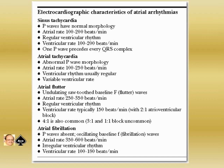What is atrial flutter? Undulating sawtooth baseline F-waves — that is, flutter waves. Atrial rate 250 to 350 beats per minute from the P-P interval. Regular ventricular rhythm; ventricular rate is typically 150 beats per minute, that is 2:1 atrioventricular block. 4:1 is also common; 3:1 and 1:1 blocks are uncommon. In atrial fibrillation, the P-wave is absent; oscillating baseline fibrillation waves are seen; atrial rate 350 to 600 beats per minute; irregular ventricular rhythm; and ventricular rate is between 100 and 180 beats per minute.